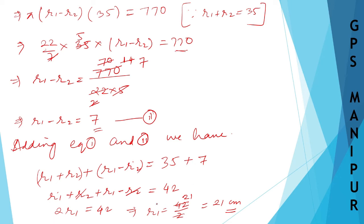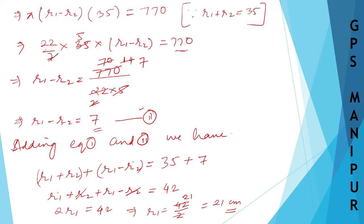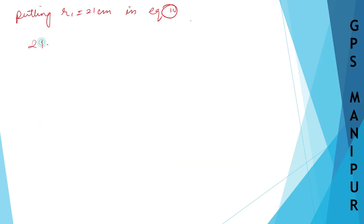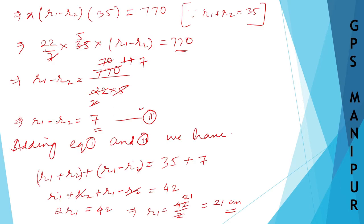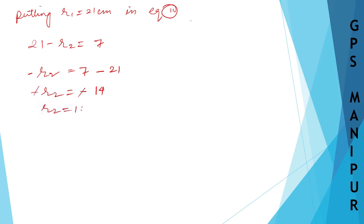Now we find r2 by putting r1 equals 21 centimeters into equation number two: 21 minus r2 equals 7. So r2 equals 21 minus 7, which gives r2 equals 14 centimeters.